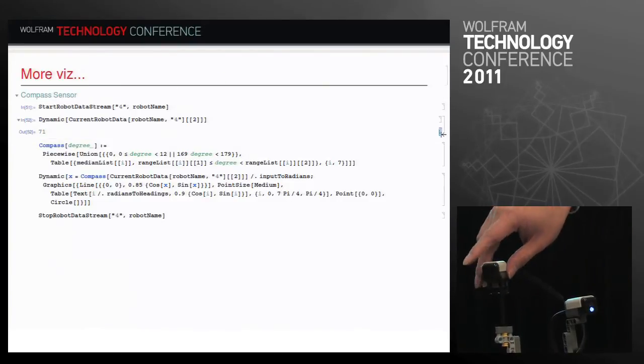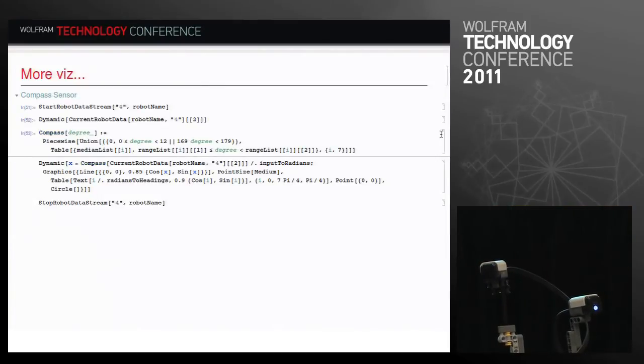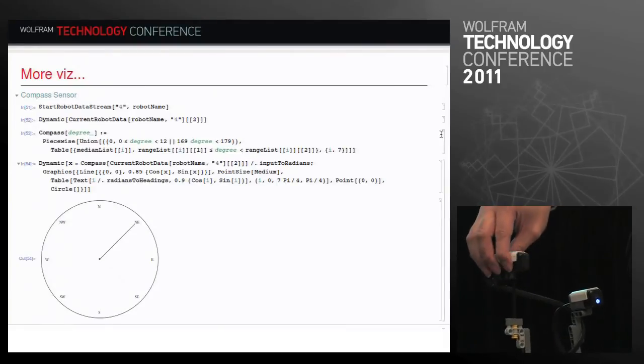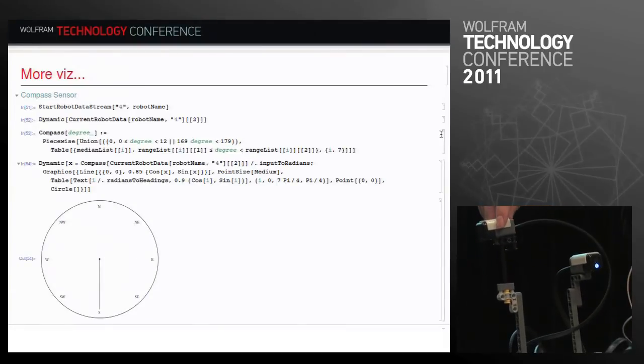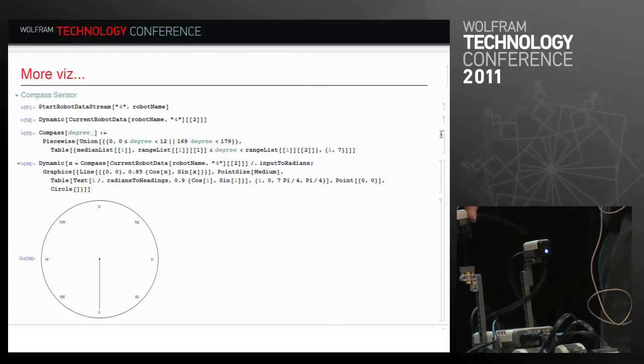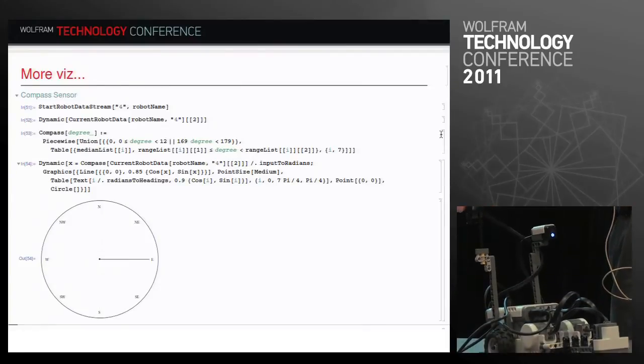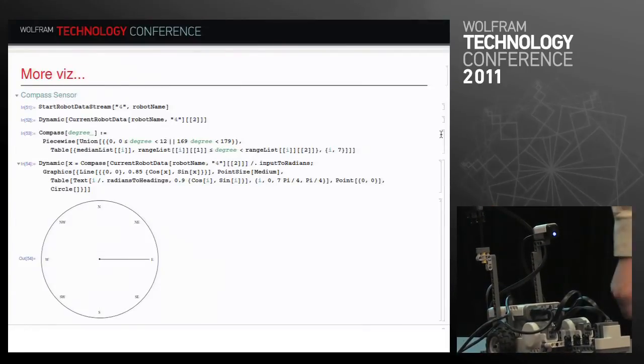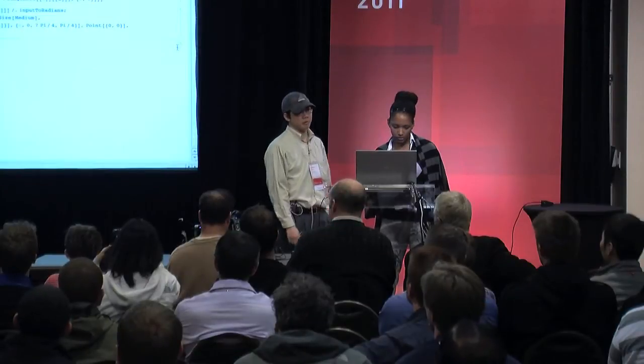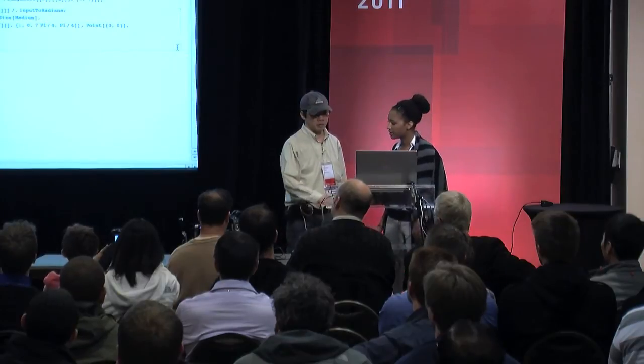Again, not very useful. But if we put it in a little function to map this into headings, now we can actually visualize the direction it is like on a compass. This is simple to do with a few lines of code. And this is really simple. Again, I just hooked in with our graphics and really quickly we can visualize that data. Lambert's going to show even more Mathematica functionality that we can hook into.